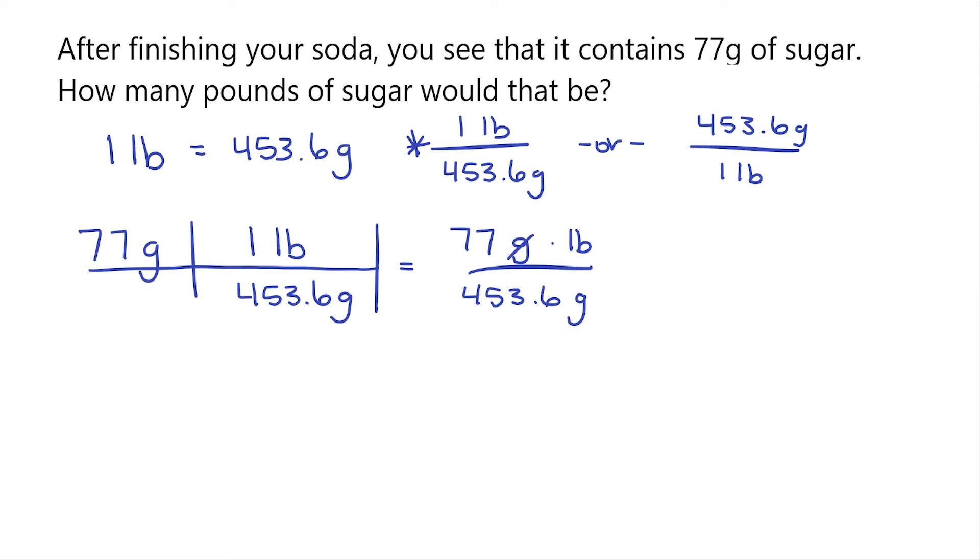Now, since we have grams on the top and bottom, those are gonna cancel out, leaving us only with pounds. So 77 divided by 453.6 is gonna be equal to 0.17 pounds. And that is how you convert from grams to pounds.